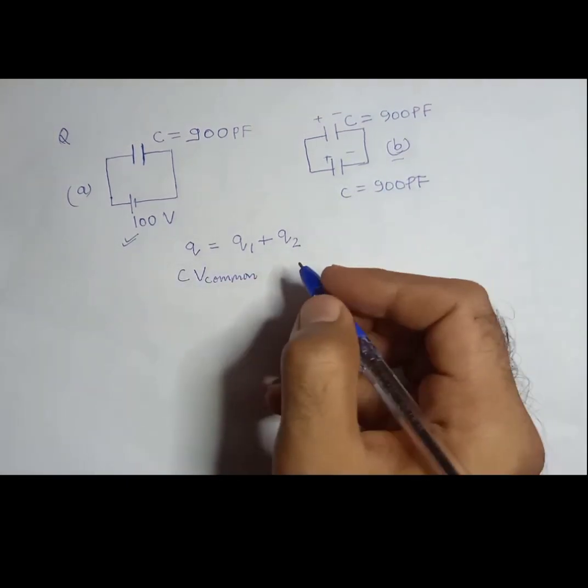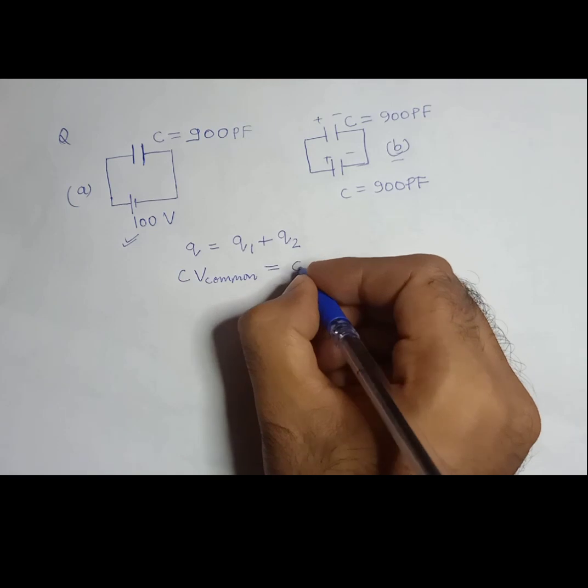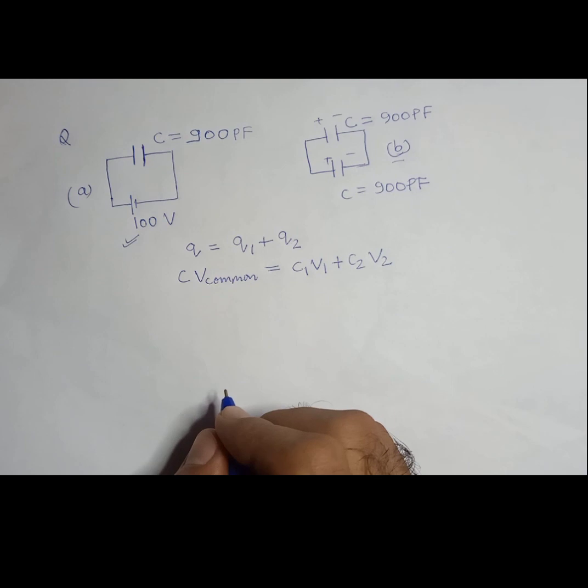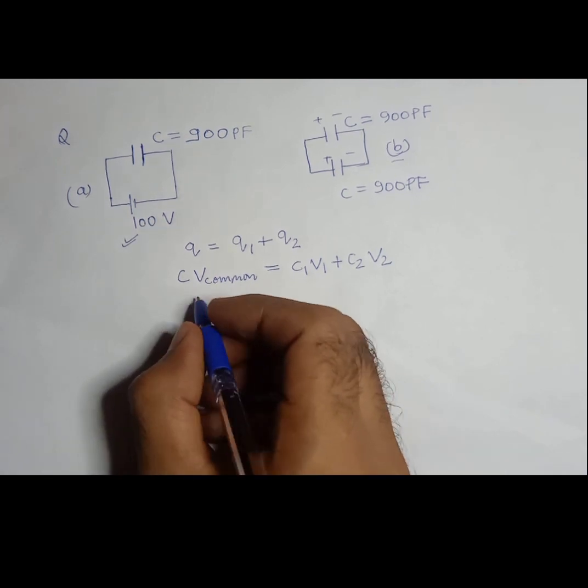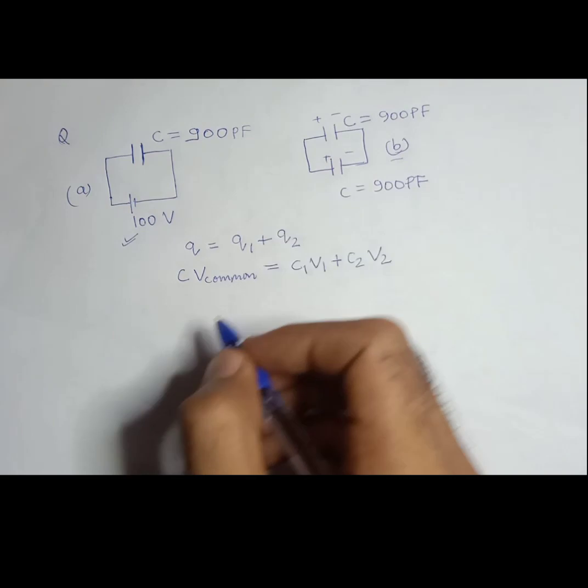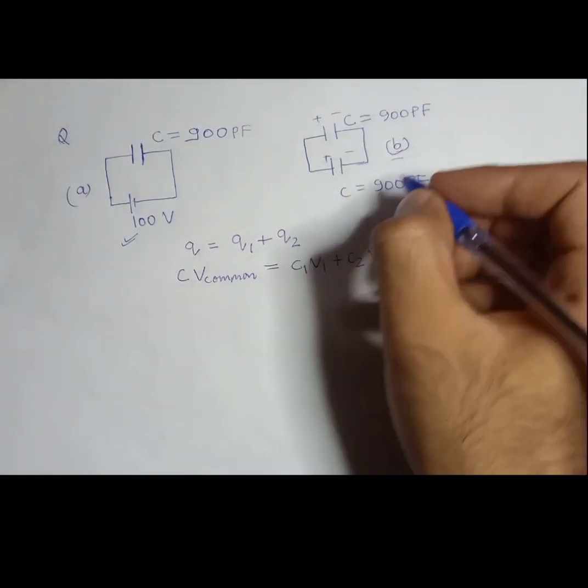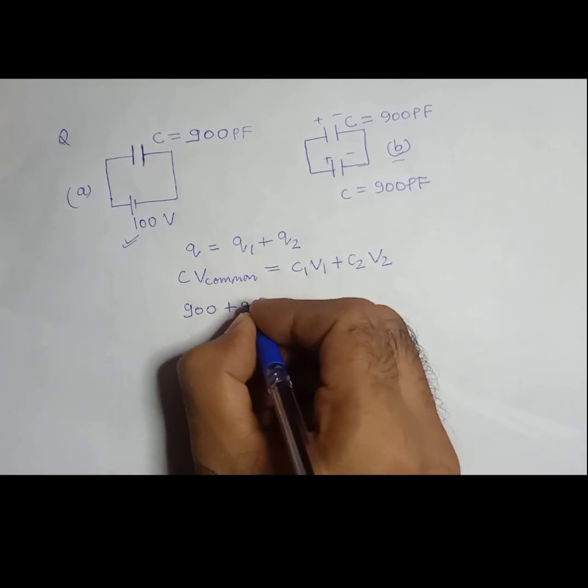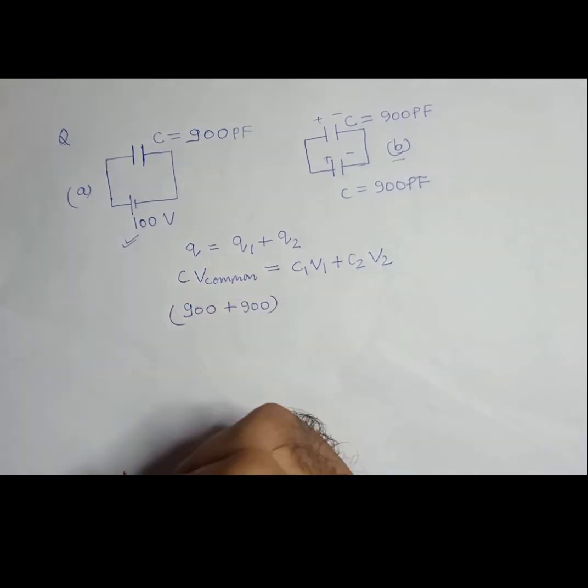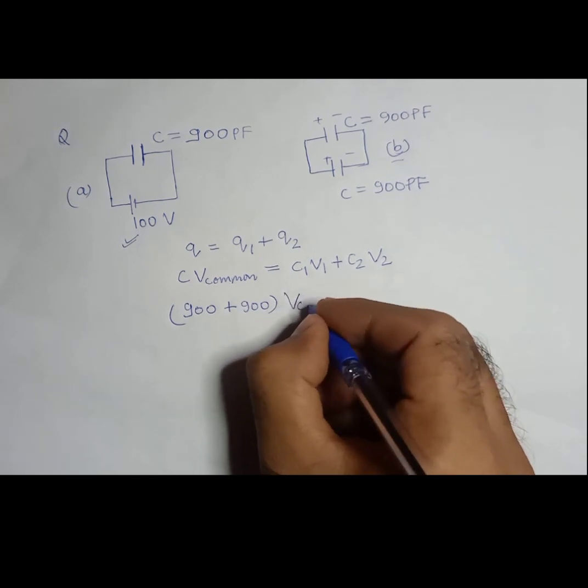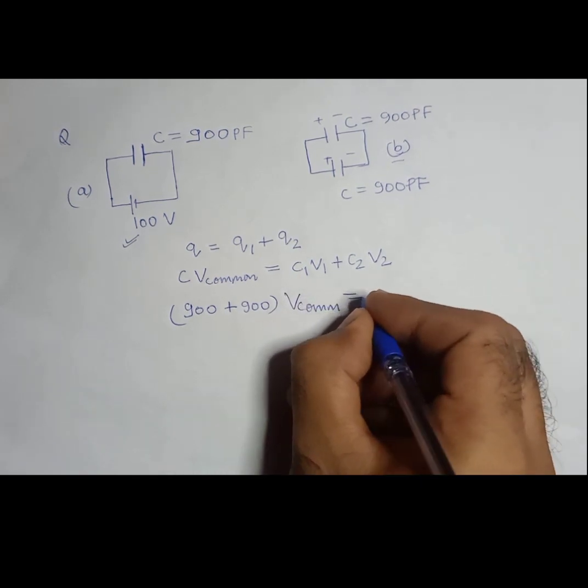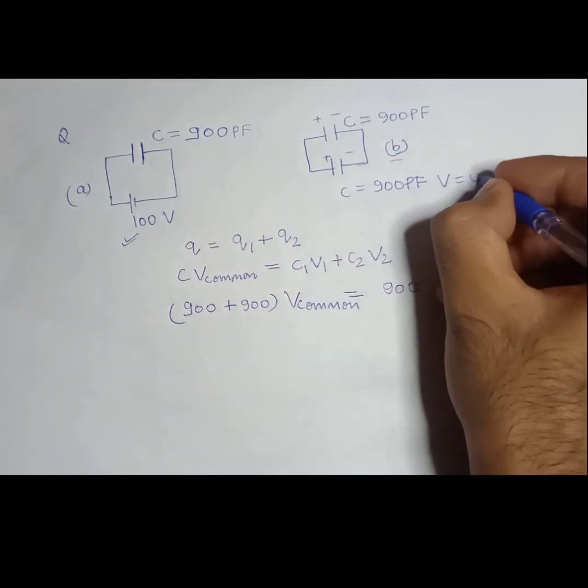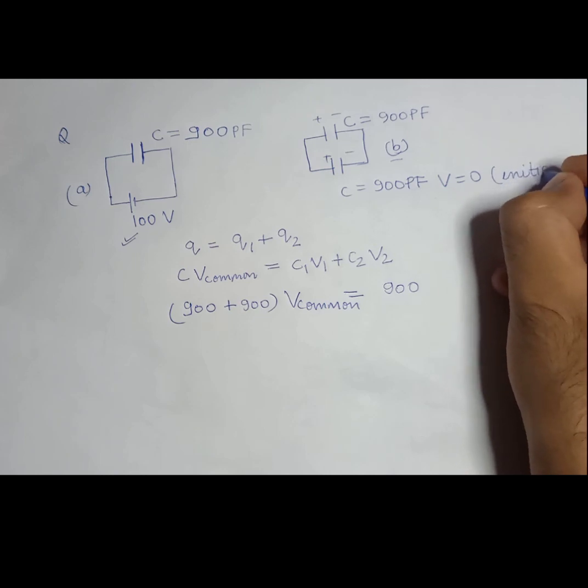And C equivalent capacitance is equal to C1 V1 plus C2 V2 in the beginning, right? So what is going to be C here? Here they are in parallel, so 900 plus 900 is equal to V common. And C1 V1, so here V is 0 initially.